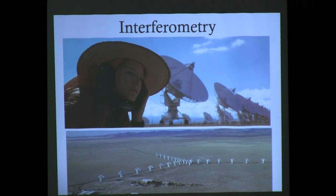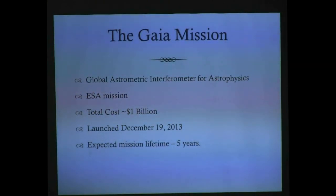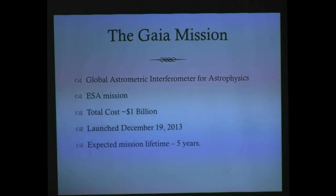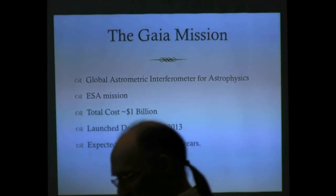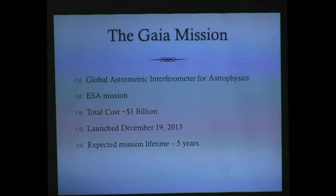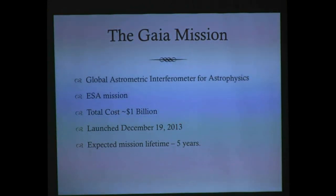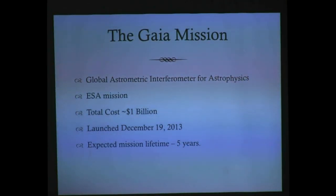Originally the Gaia mission was going to use two separate telescopes in space for interferometry, but later designs use one spacecraft with two telescopes inside — not combining their light for interferometry. This is a European Space Agency mission with a total cost of about one billion euros, launched in December 2013, and projected to last five years. Like the Hubble Space Telescope, which was designed for 10 years and is now past 27, many of these missions last well beyond their projected lifetimes.